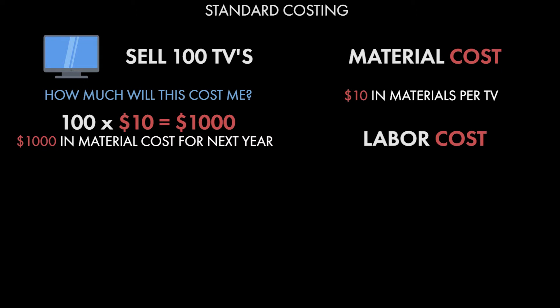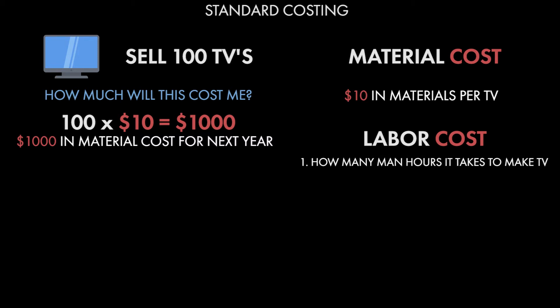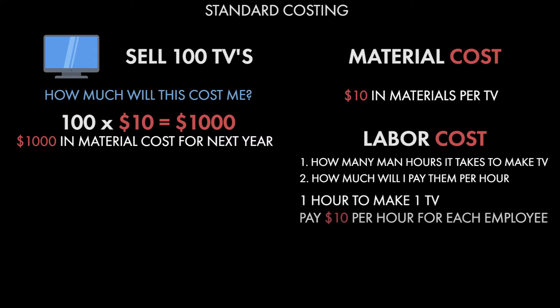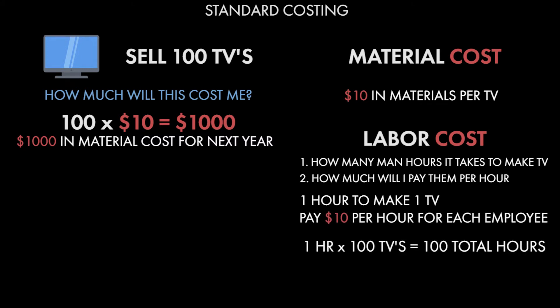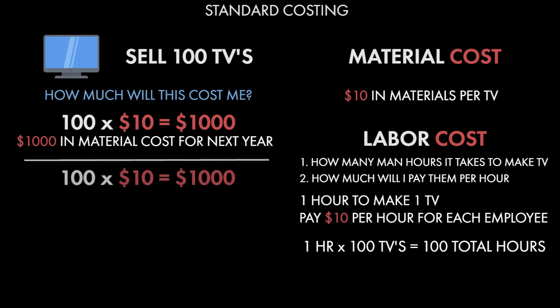That's half the equation. The other half is labor. Now labor has two different folds to it: how many man hours is it going to take to make a TV, and how much am I going to pay them per hour? Let's say it takes my workers one hour to make a TV and I pay them $10 an hour. One hour per TV times 100 is 100 total hours to make 100 TVs. Multiply that by the $10 per hour I pay my employees and we get $1,000. So we have $1,000 in materials and $1,000 in labor to make 100 TVs — in total, it's going to cost me $2,000.